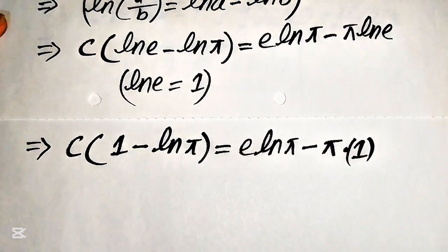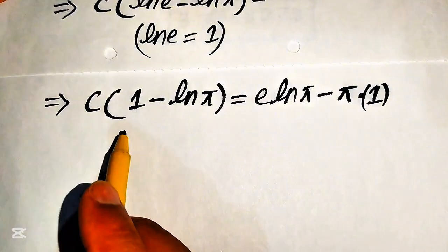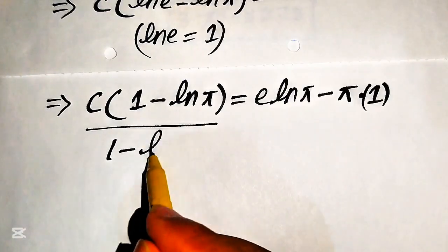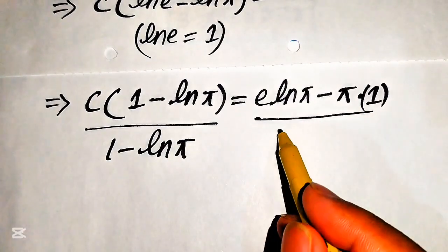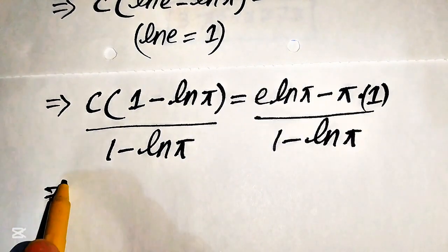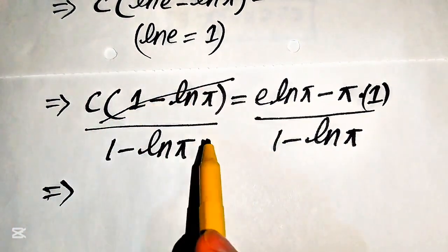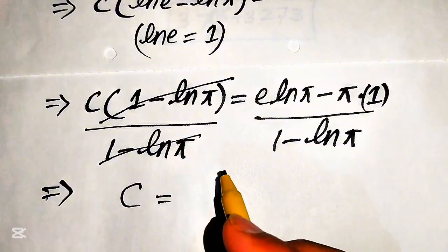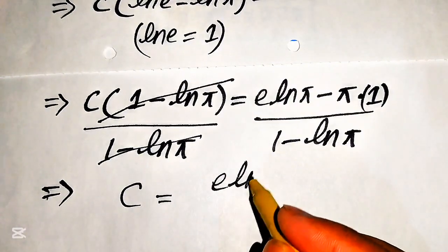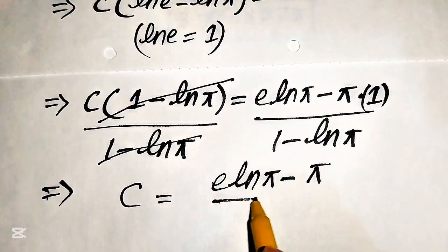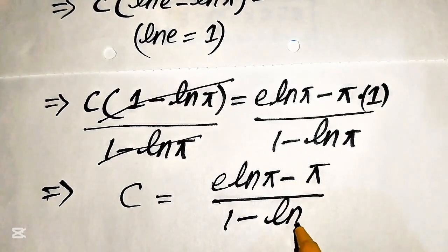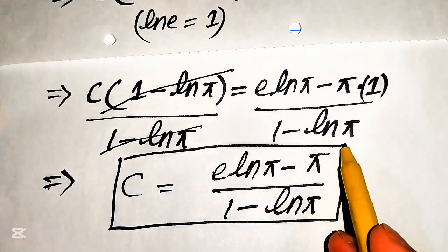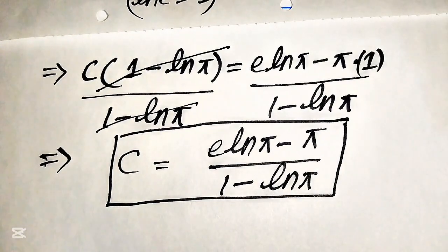Since we are solving for c, we need to eliminate (1 minus log pi) from the left-hand side. We divide both sides by (1 minus log pi), which cancels on the left. So the final answer is c equals (e times log pi minus pi) divided by (1 minus log pi). Thank you so much for watching this video — please subscribe to my channel for more exciting videos.